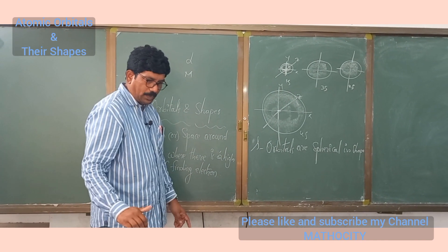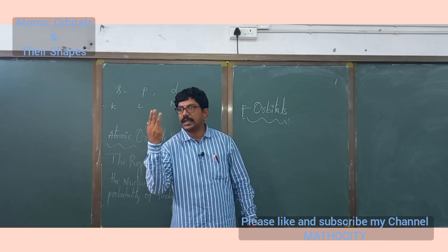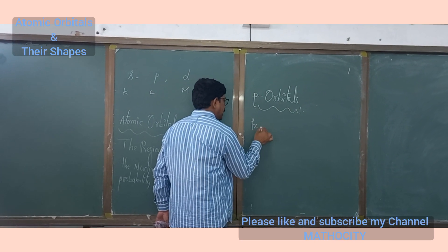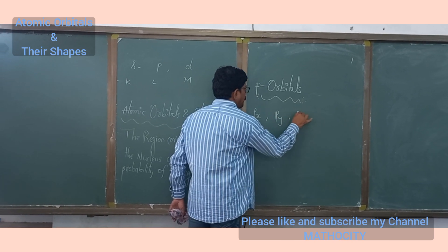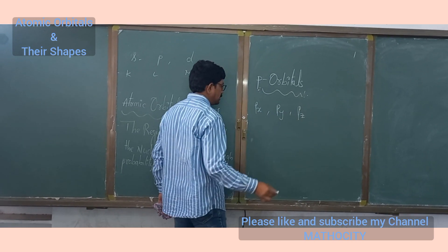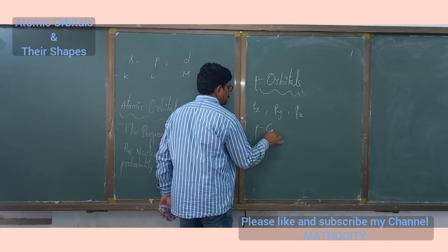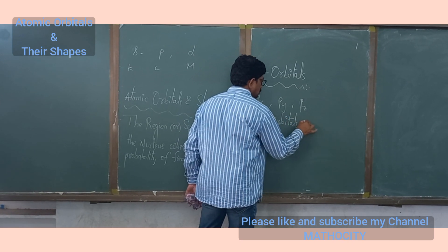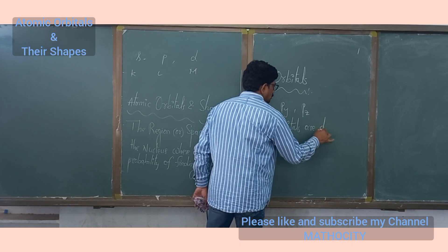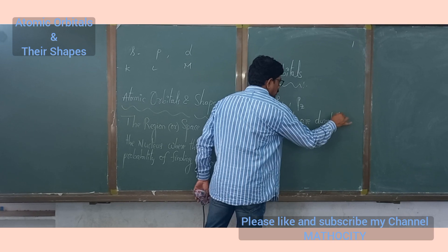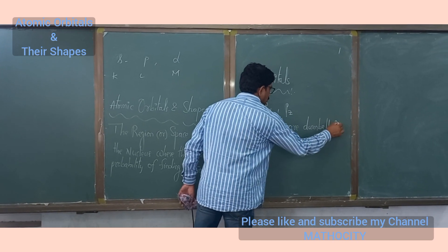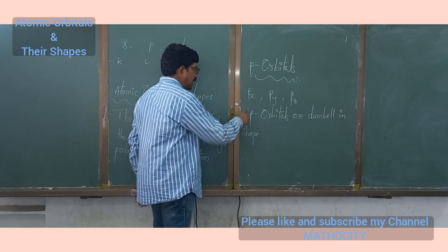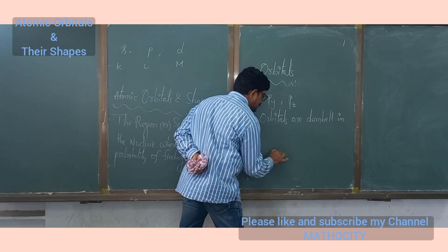Next, moving to the P orbital. There are three degenerate P orbitals: Px, Py, and Pz. P orbitals are dumbbell in shape. If the electron cloud is oriented along the x-axis, that is the Px orbital.